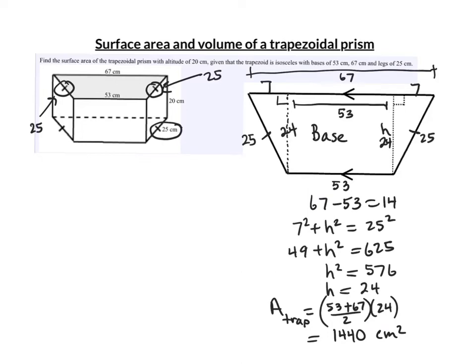Now we can use that to find the surface area and the volume both. The surface area, or the area of all the faces, I'll call that the total area, has two trapezoids in it. So I'm going to put a 2 there and it's 2 times 1440.